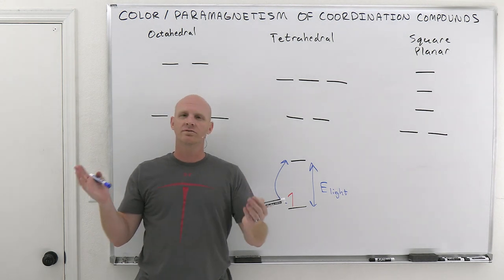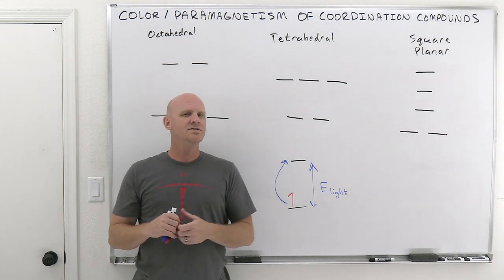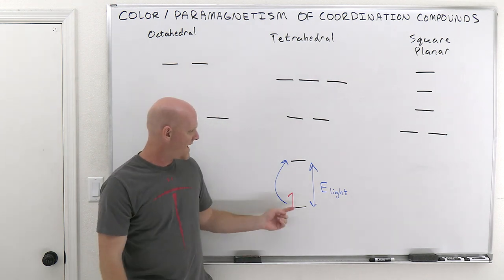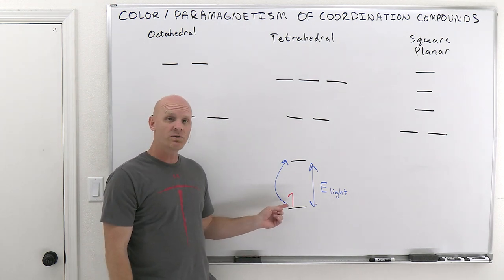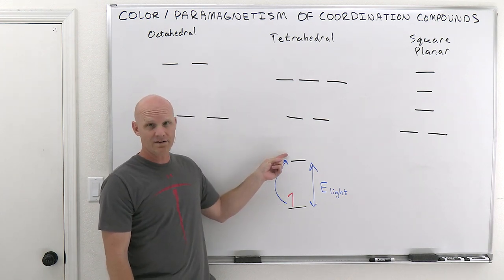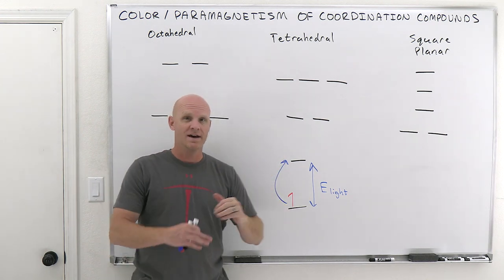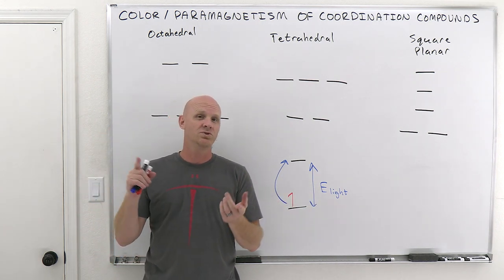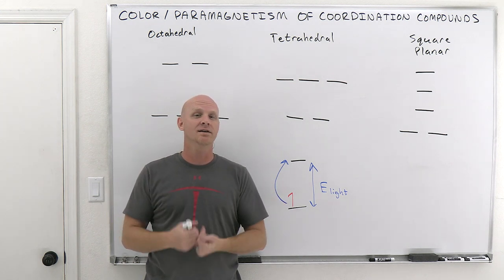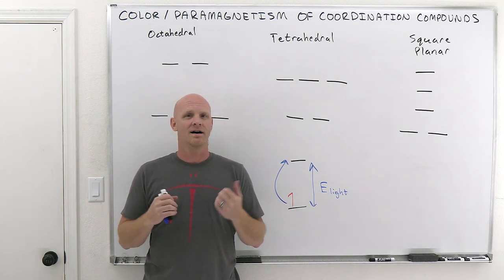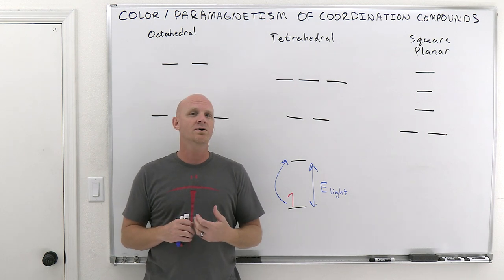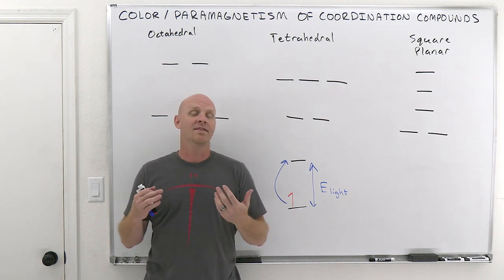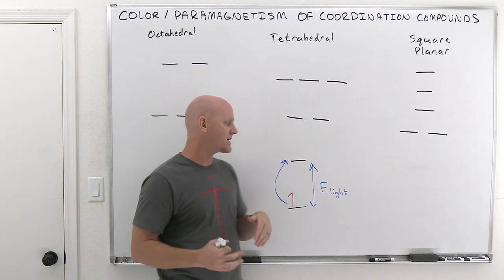If you take a look at, say, the oxygen in this room — it's invisible, and it's invisible for a reason. If you look at the highest energy orbital that has electrons in oxygen, and then the lowest energy orbital above that, the gap is huge. It's so huge that the energy difference corresponds to the energy of ultraviolet light, which our eyes cannot see, which is why we can't see oxygen. So if a compound is going to appear colored, it needs to absorb light in the visible spectrum.